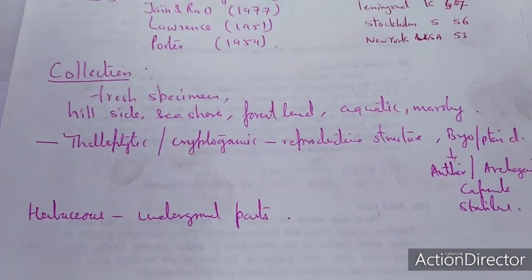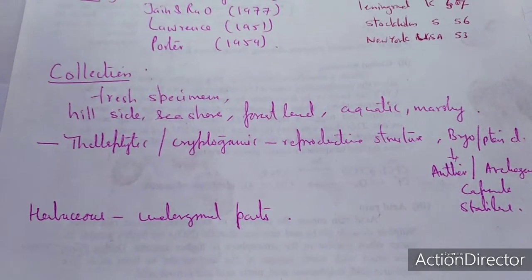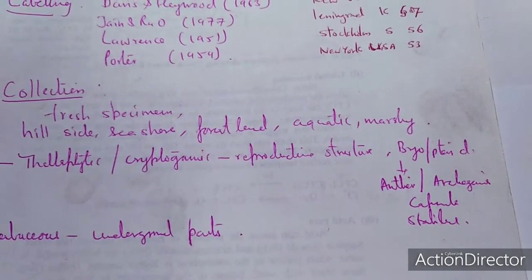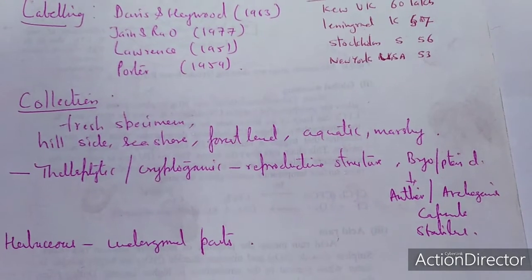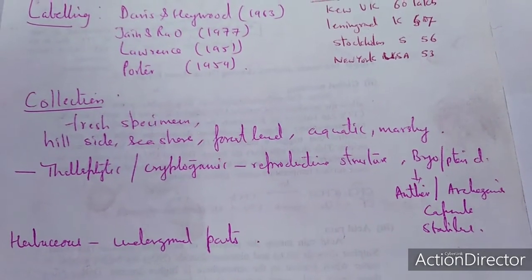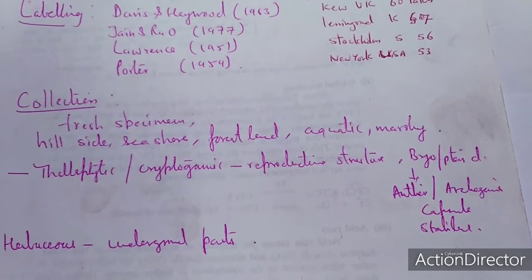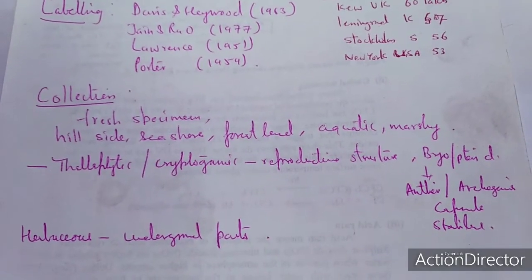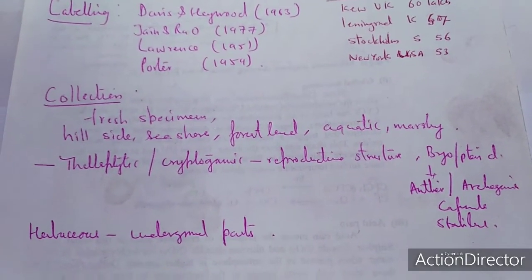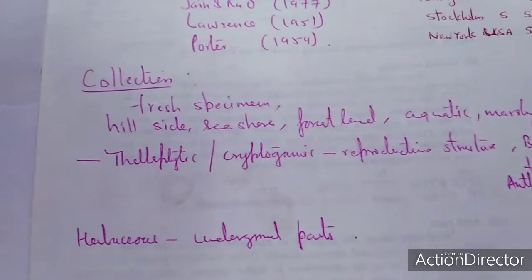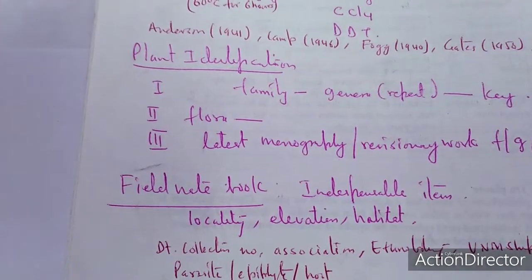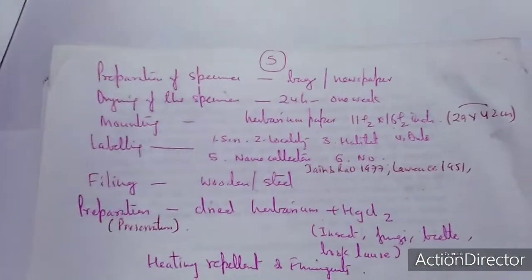Whether we are collecting thalophytes, cryptogamic plants, or others, we must have a reproductive structure — for example, in bryophyta as well as pteridophyta. If we are going to collect ferns, we need the sori. Once we are going to collect herbaceous plants, we need the underground plant part as well. The preparation of the specimen begins with a bag as well as newspaper. The drying of the specimen can be done within 24 hours to one week; no artificial heat can be used.